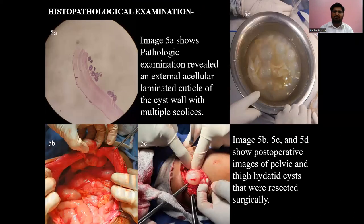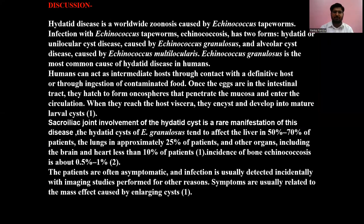On histopathological examination, image number 5a shows the pathological examination of the external acellular laminated cuticle of the cyst wall with multiple scolices. Image numbers 5b and 5c are intraoperative images during surgery showing a hydatid cyst, and image 5d is a post-operative image of the pelvis and thigh. Hydatid cysts were resected surgically.